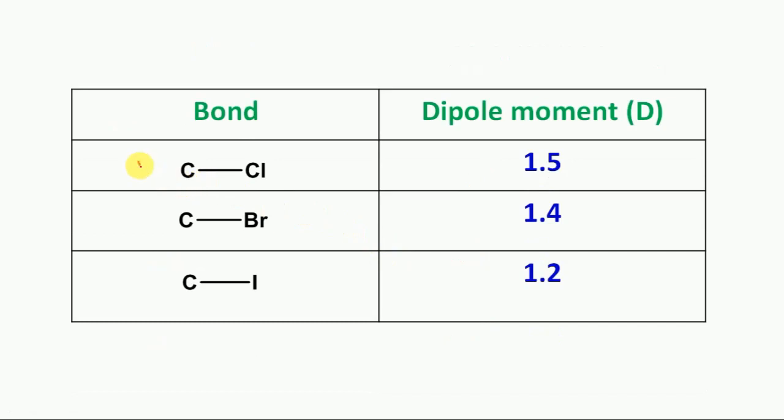The CCl bond has a dipole moment of 1.5, CBr is 1.4, and CI is 1.2.